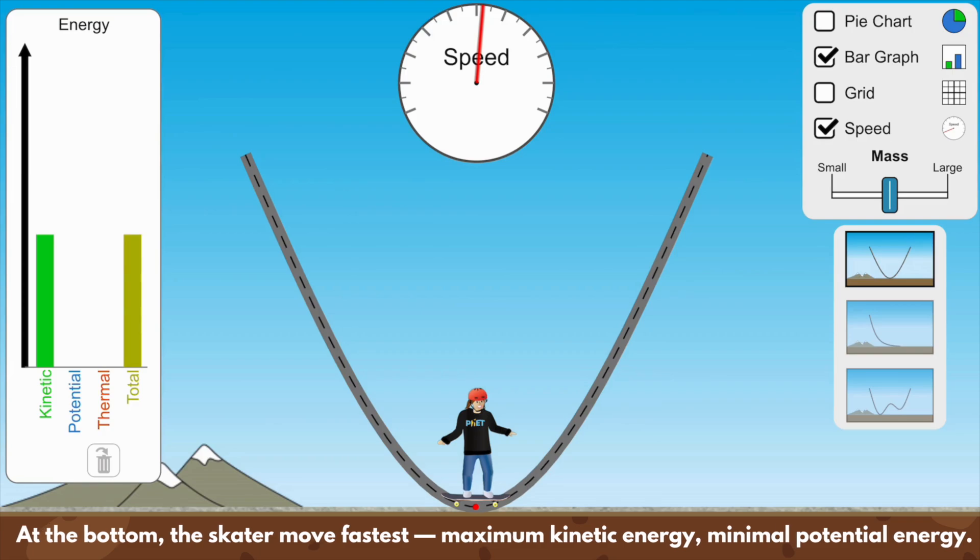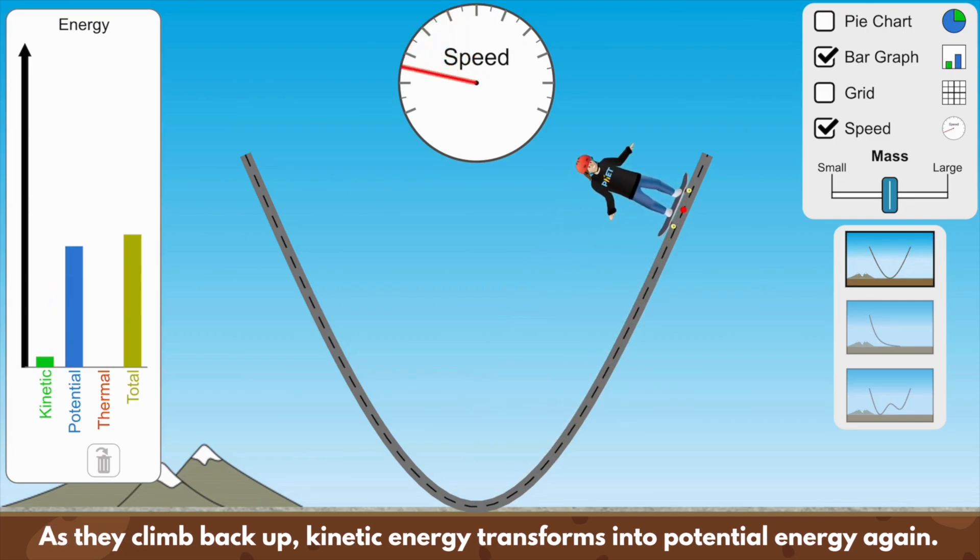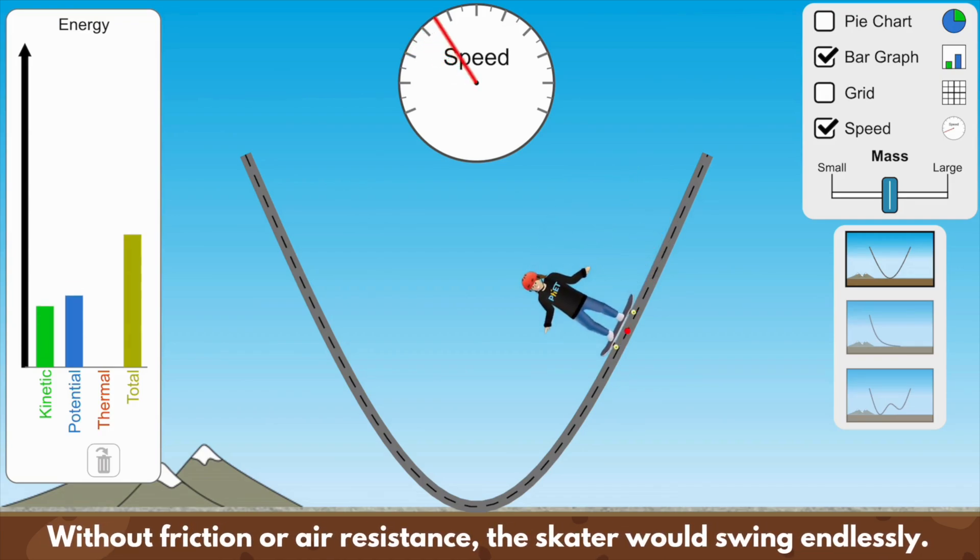Then as they climb the other side that kinetic energy turns back into potential energy. If there's no friction or air resistance the skater would keep swinging back and forth forever with the total mechanical energy staying constant.